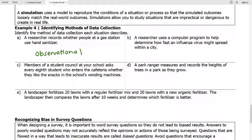Part B. A researcher uses a computer program to help determine how fast an influenza virus might spread within a city. Well, computer program generally means we're using a simulation.